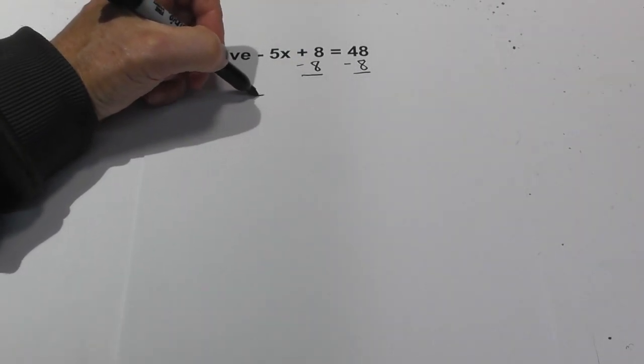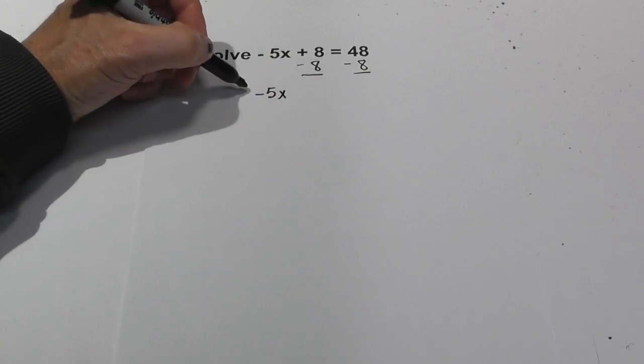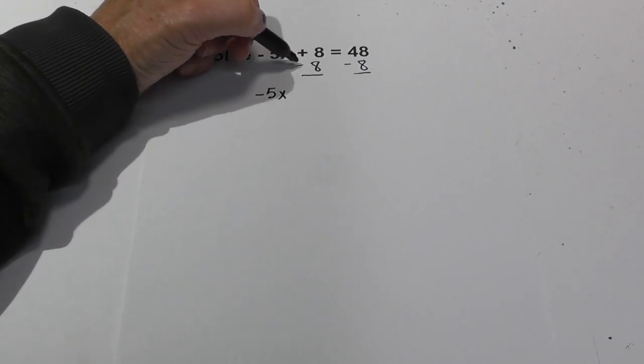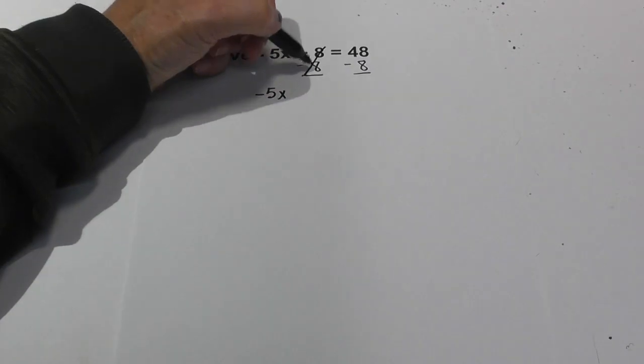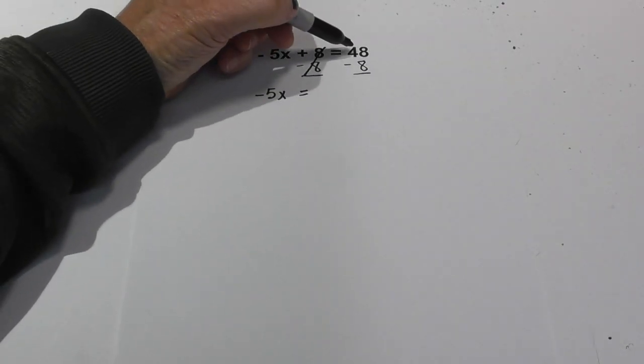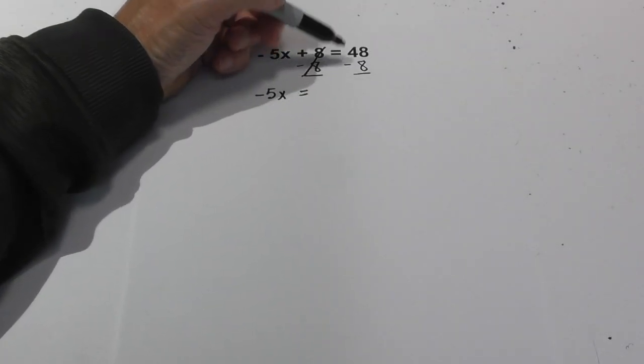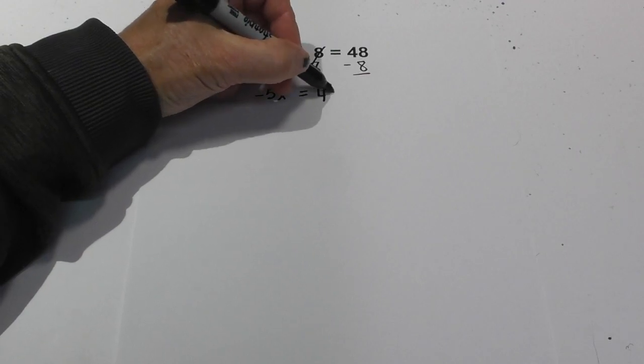Okay, let's bring down the negative 5x. Remember the negative sign. Positive and negative 8 cancel out. So this is equal to 48 minus 8 is equal to 40.